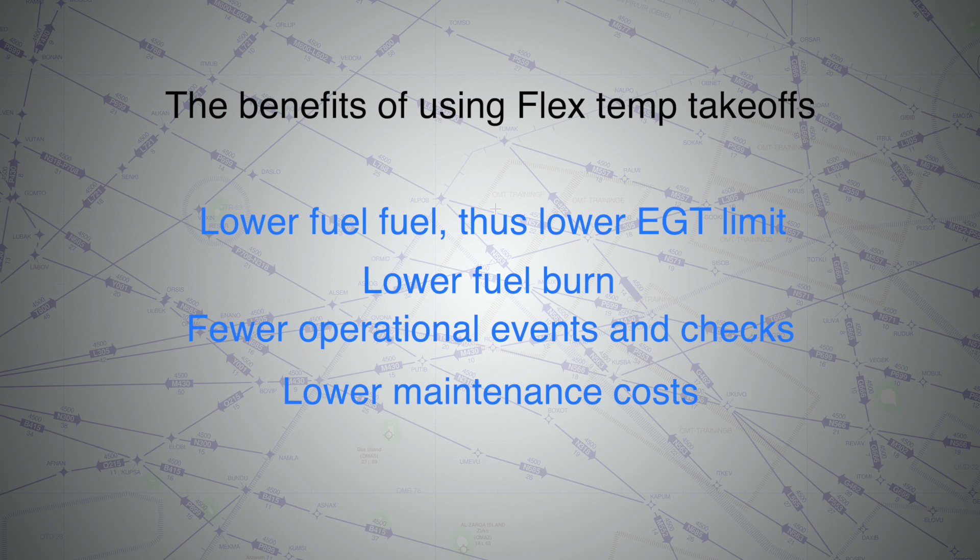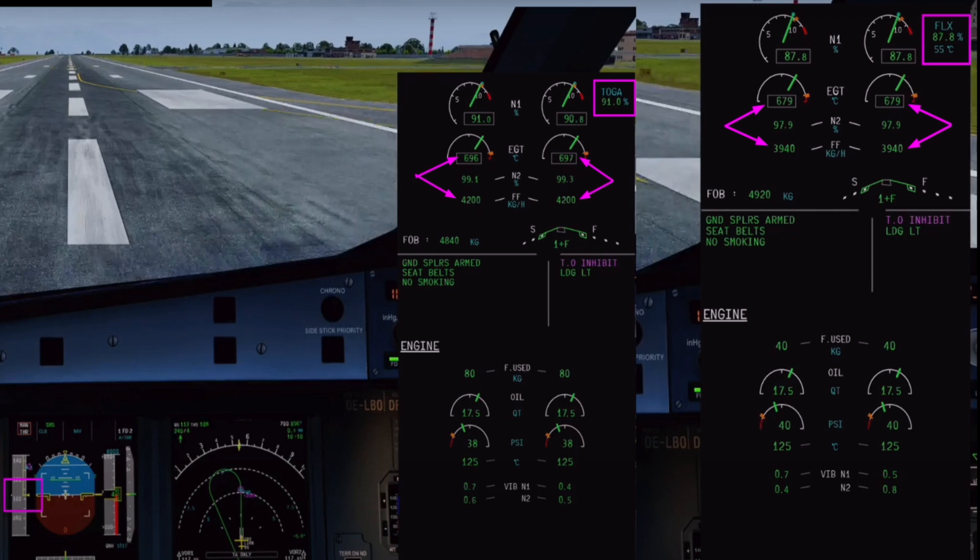Lower maintenance cost since the AGT margin decreases slower over time and hence longer engine life. A flex temperature takeoff does not use TOGA detent or maximum thrust for takeoff each time.